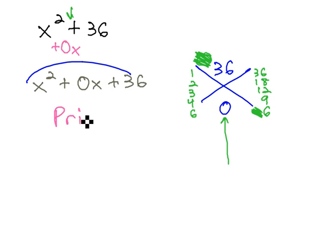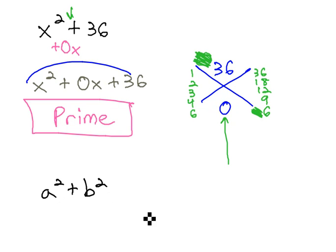This one is prime. It turns out that a sum of squares, a squared plus b squared, if it doesn't have a GCF, will always be prime,